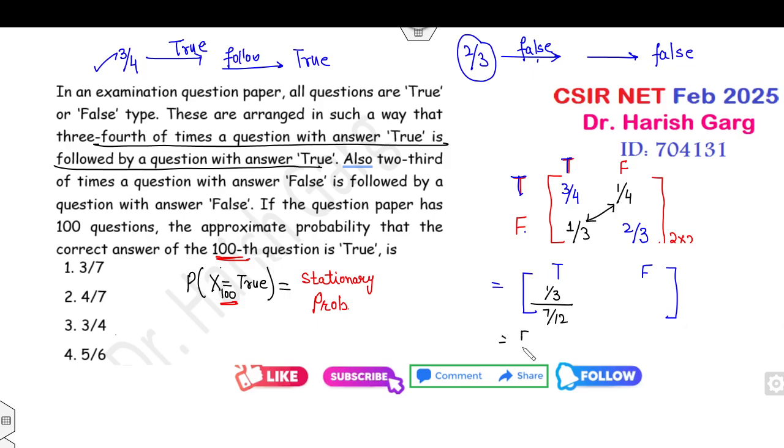Now can you find the stationary probability of true and false? The stationary probability will be 1/3 divided by the sum of the off-diagonal elements, which is 7/12. So the answer is 4/7. If it is 4/7, the sum will be 1, so it must be 3/7. The answer is 4/7, which is the right answer.